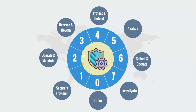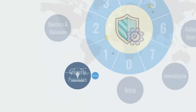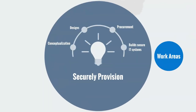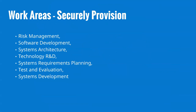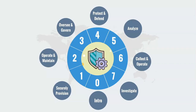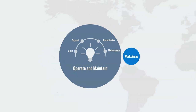The first domain is Securely Provision. This domain covers all the activities related to the conceptualization, design, procurement, and building of secure IT systems and networks. All the work areas related to risk management, software development, system architecture, technological research and development, system requirement planning, test and evaluation, and system development are under this domain.